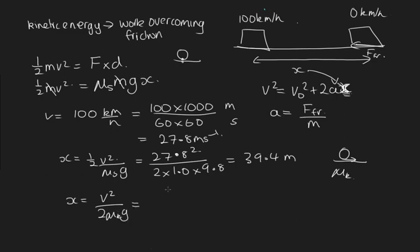So it starts from the same speed. So that's 27.8 squared over 2 times 0.80 times 9.8. And solving that on the calculator, we get 49.3 meters.